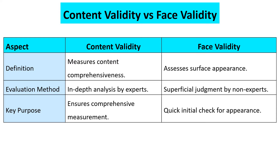Content validity measures content comprehensiveness and the adequacy covered by the instrument, whereas face validity asserts the surface appearance of the instrument. The evaluation method for content validity is an in-depth analysis by experts, while face validity involves a superficial judgment by non-experts or respondents. The key purpose of content validity is to ensure comprehensiveness, whereas face validity is just a quick initial check — making face validity the weakest type of validity.